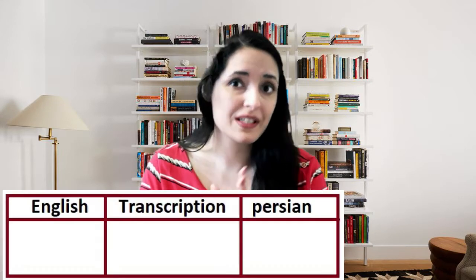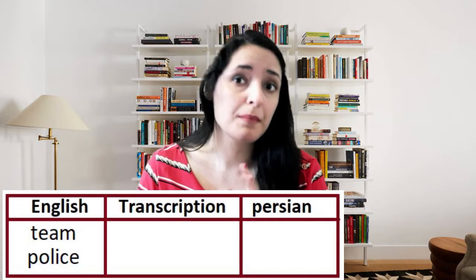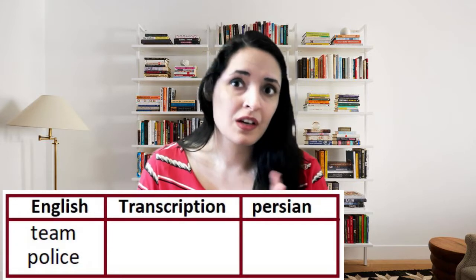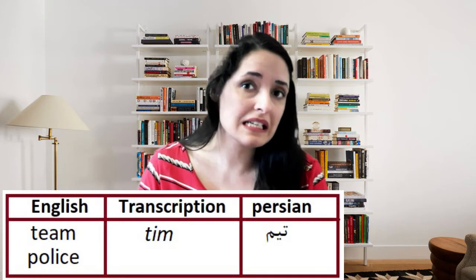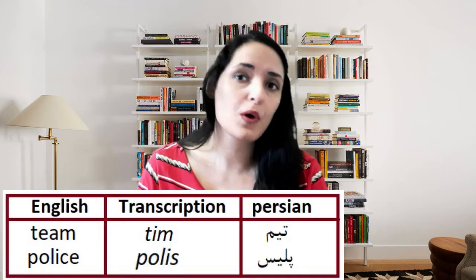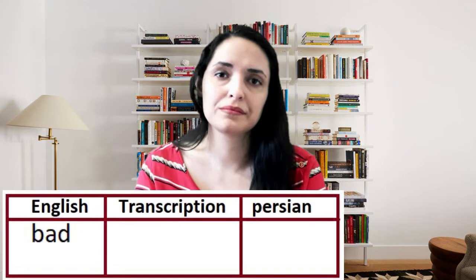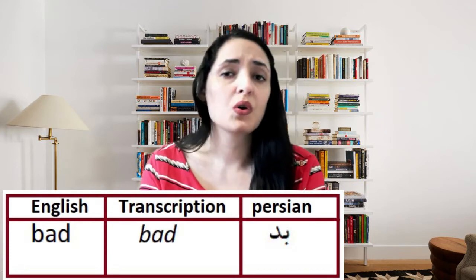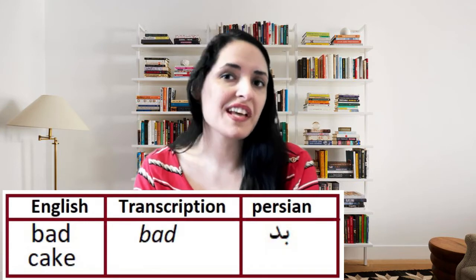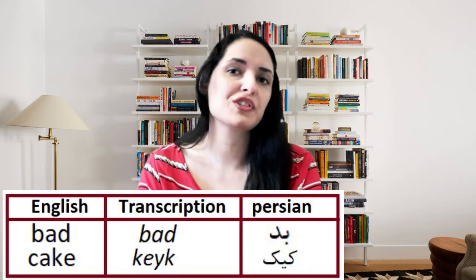Some words have the same pronunciation and the same meaning — they are exactly the same in English and in Persian. For example, 'team' in Persian is 'team', and 'police' is 'police'. Another example is 'bad' — in Persian it is 'bad'. Or 'cake', which is the same in Persian: 'cake'.